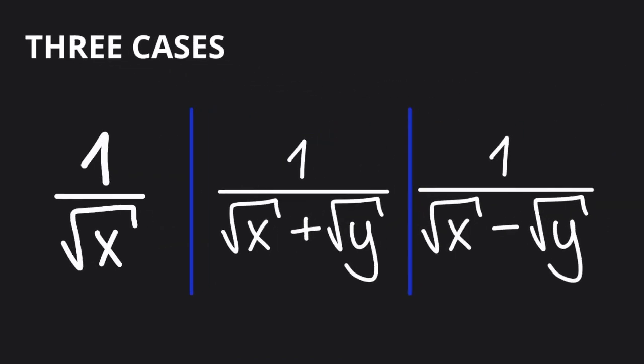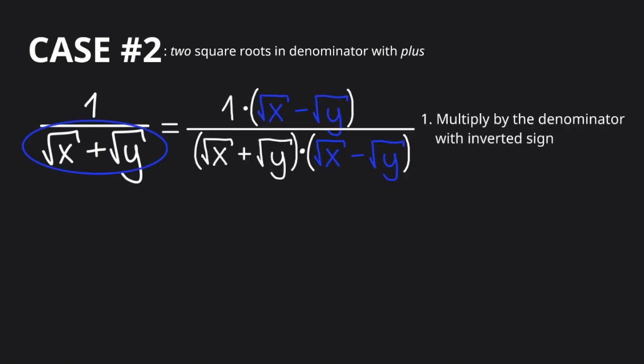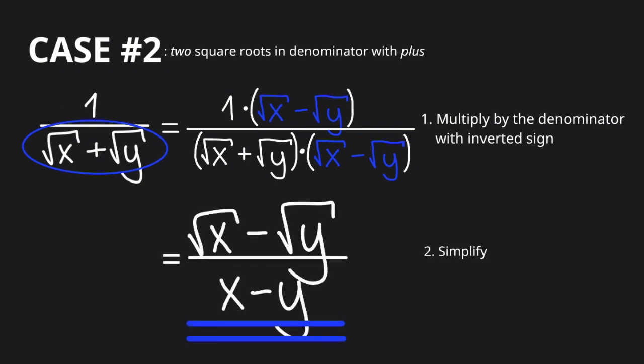Let's look at the second case. In the second case, we have two square roots that are added to each other, or a square root and a number that are added to each other. And what is very important here, even though we do multiply by the denominator, we need to invert the sign. So the plus becomes a minus. And in the second step, as before, we simplify.